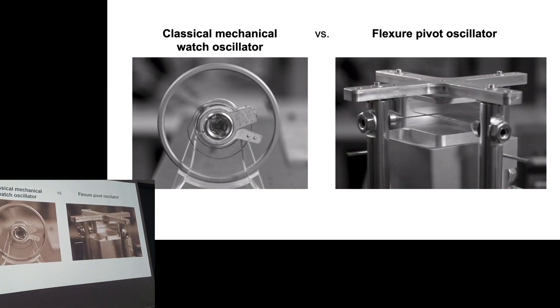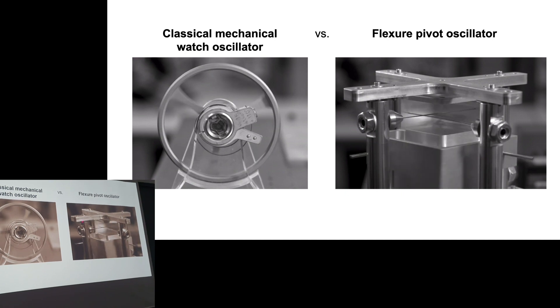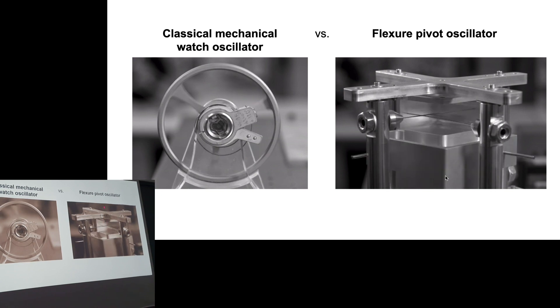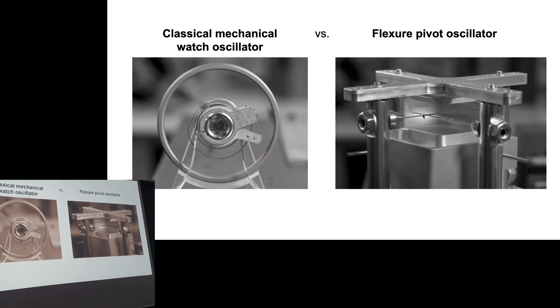And I want to replace this with a flexure pivot oscillator. As you can see here, it fulfills a similar motion of oscillating in a pivoting motion, except that there is no physical axis. You only use flexible elements.